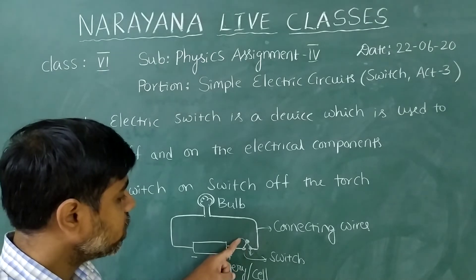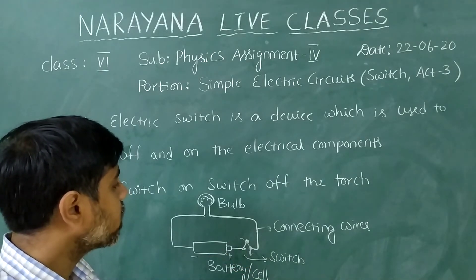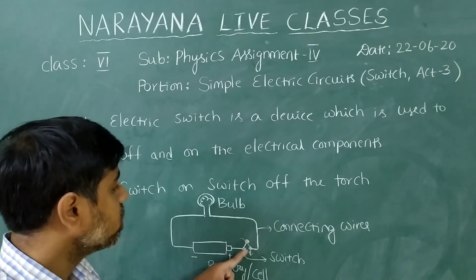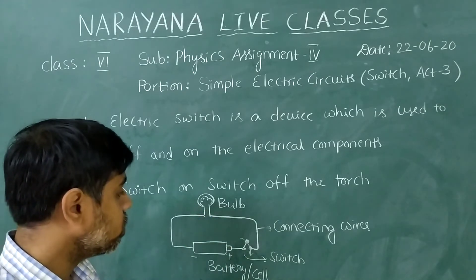When the switch is off, when the switch is not on, then automatically the switch is not closed, then the bulb will not glow. That is one situation.